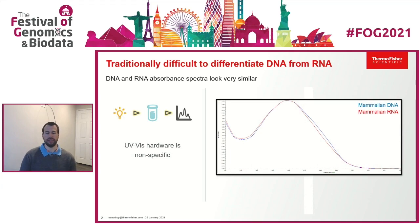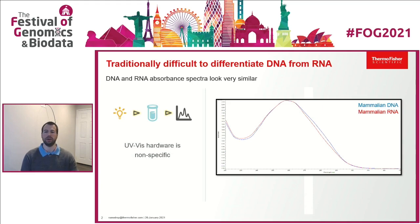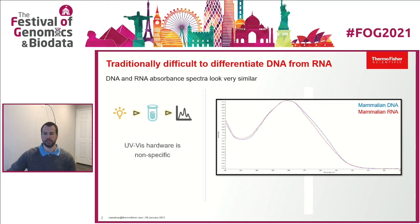One of the things we've identified as difficult for scientists and researchers is differentiating between DNA and RNA. As you see here in this graph, DNA and RNA look nearly identical. Typically, we use the absorbance at 260 nanometers to calculate DNA and RNA concentrations by applying the Beer-Lambert equation. That really just focuses on a single wavelength, so all the other wavelengths don't matter when calculating the concentration.